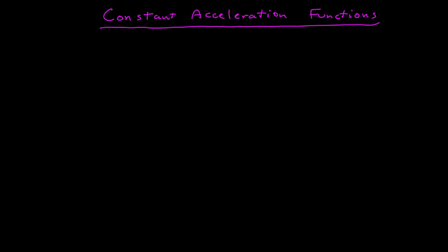Let's derive the acceleration, velocity, and position functions of time in one dimension for constant acceleration. We're going to call that one dimension the x-axis. The acceleration is some function of time, but it's just a constant.